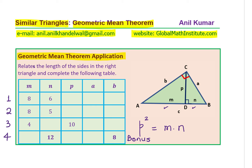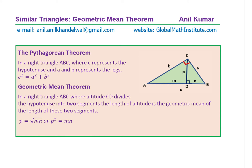Some of you can pause the video at this stage and attempt the questions, then check the results. As you know, the Pythagorean theorem relates the three sides of a right triangle: C squared equals A squared plus B squared. The geometric mean theorem states that in a right triangle ABC, where altitude CD divides the hypotenuse into two segments, the altitude P is the geometric mean of those segments: P equals the square root of MN, or equivalently P squared equals MN.